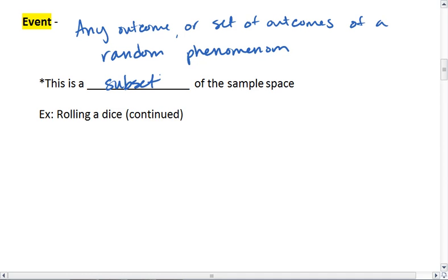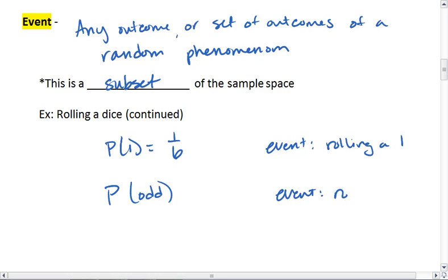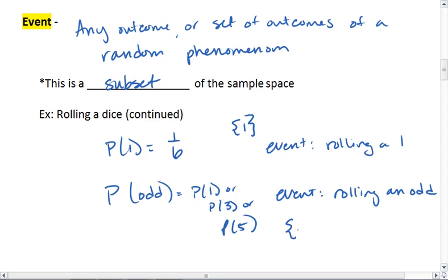So for example, we might want to know the probability of a 1. In that case, the event is rolling a 1, in which case we have 1/6. We might want to know the probability of rolling an odd number. So the event is rolling an odd, which is a probability of a 1, or a 3, or a 5. So the event in this first one is rolling a 1. The event in the second example is a 1, a 3, or a 5.